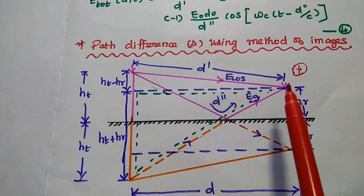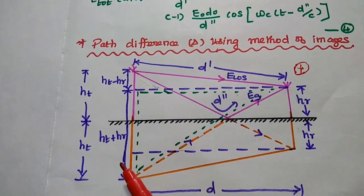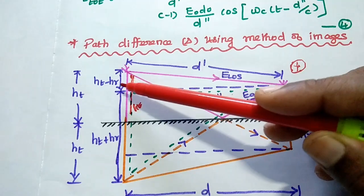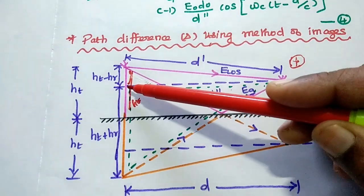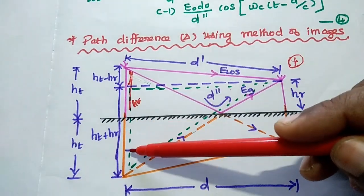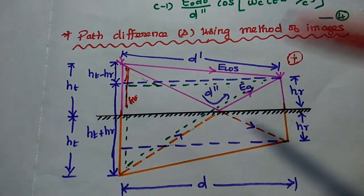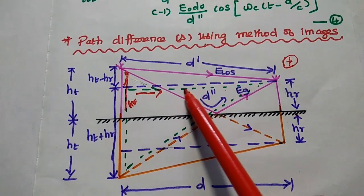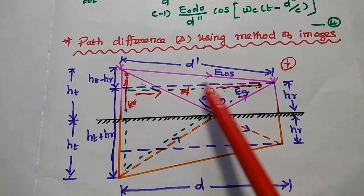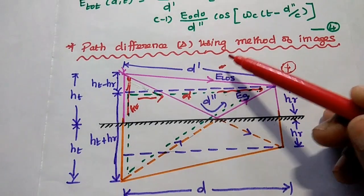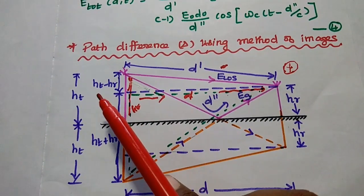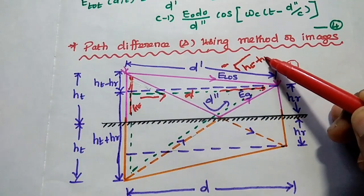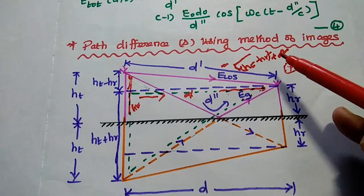To find d' and d'', we use the method of images by drawing the same diagram below the ground line. Taking the overall antenna heights, one side can be represented as HT minus HR, and the other as HT plus HR. To find d', we consider the small triangle with base d and height (HT - HR). By Pythagoras theorem, d' = sqrt((HT - HR)^2 + d^2).